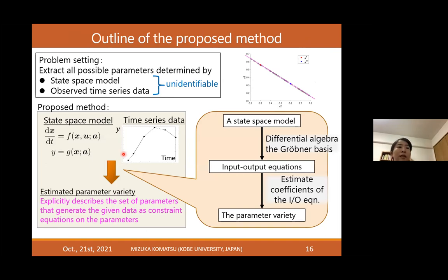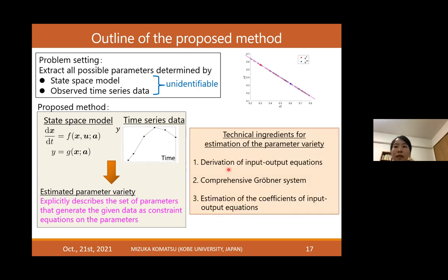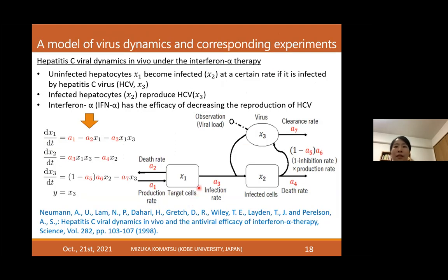Our goal is to extract all possible parameters determined by a state-space model and given observed time series data. Our method is divided into two parts. The first part is differential elimination, by which we obtain input-output equations from the state-space model. The second part is estimation of the coefficients using time series data, from which we obtain the parameter variety. I will explain the technical details through an example.